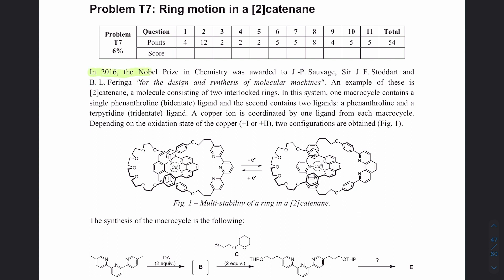In 2016, the Nobel Prize in Chemistry was awarded for the design and synthesis of molecular machines. An example is a two-catenane, a molecule consisting of two interlocking rings. In this system, one macrocycle contains a single phenanthroline bidentate ligand — it attaches to metals on two spots — and the second contains two ligands: a phenanthroline and a terpyridine, a tridentate ligand with three attachment sites.